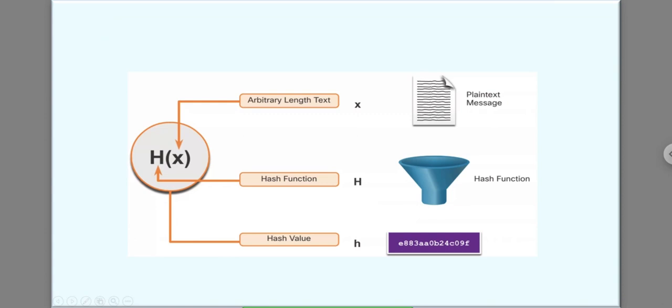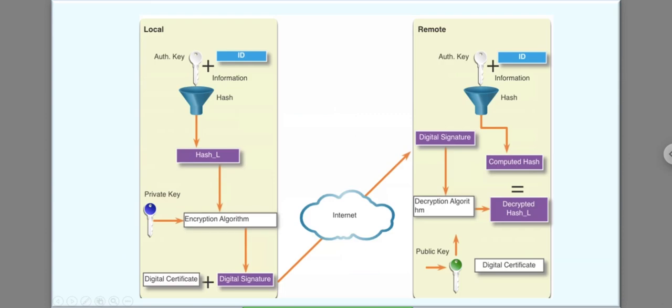The plain text input to the hash function — the arbitrary-length text — when given as input to the hash function, generates a fixed-length hash value that is not reversible. This hash value cannot be reversed back to plain text. Passwords can be cracked in two different ways: either locally or remotely.